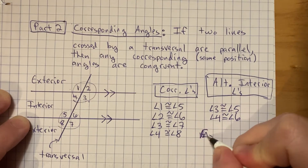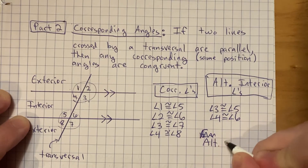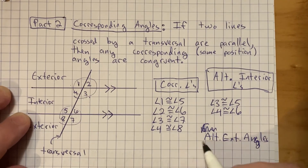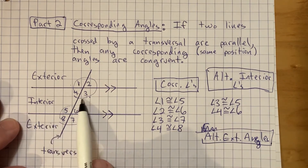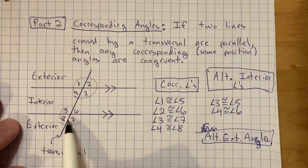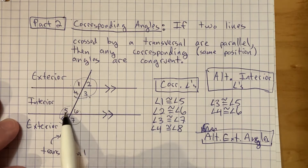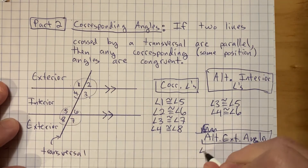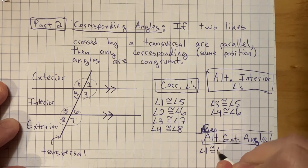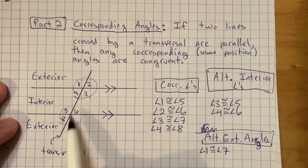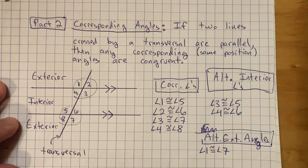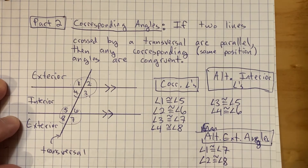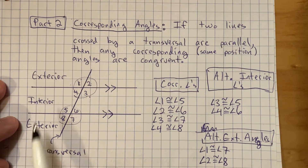And then lastly we have alternate exterior angles. Alternate exterior angles are the same idea, only instead of being on the interior, they're on the exterior. One is the same as five, and five is the same as seven because they're vertical, so one is the same as seven. Angle one is congruent to angle seven — they're on opposite sides of the line and on the exterior. The same applies to angles two and eight, so angle two is congruent to angle eight. Make sure that you understand all of that.